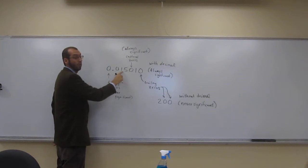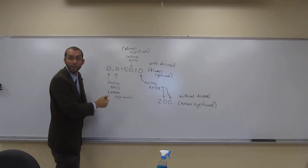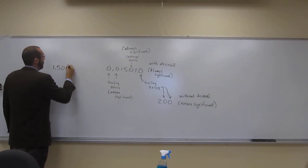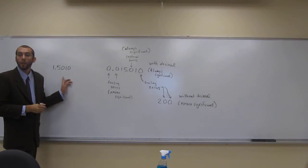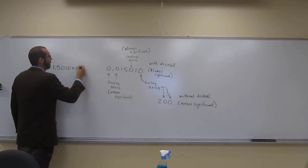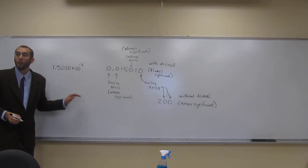So 1, 2 to the right that's negative. So this first one's going to be 1.5010 because we're going to keep all the significant zeros and digits times 10 to the negative 2.